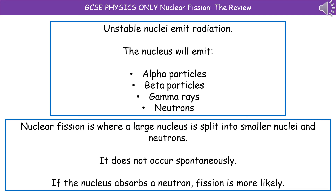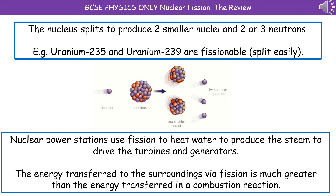For those of you doing GCSE physics, we need to know about nuclear fission. Unstable nuclei emit radiation, and the nucleus will emit alpha particles, beta particles, gamma rays or neutrons, or a combination of the above. Nuclear fission is where a large nucleus is split into smaller nuclei and neutrons. It doesn't occur spontaneously, but if the nucleus absorbs a neutron then fission is more likely.